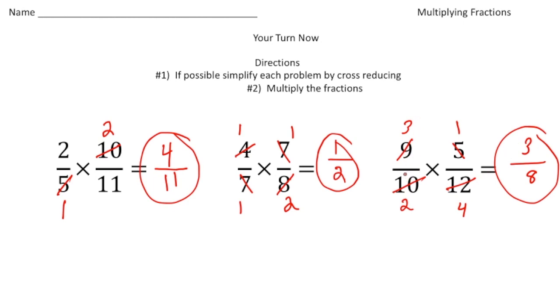Now one last thing. Let's say for this last problem we did not cross reduce. I did just 9 times 5 which is 45, and then 10 times 12 which is 120. What you have to do now is reduce 45/120, and eventually you would get 3/8. Personally I find it a lot easier just to cross reduce, and then multiply, and then that's it. How'd you do?